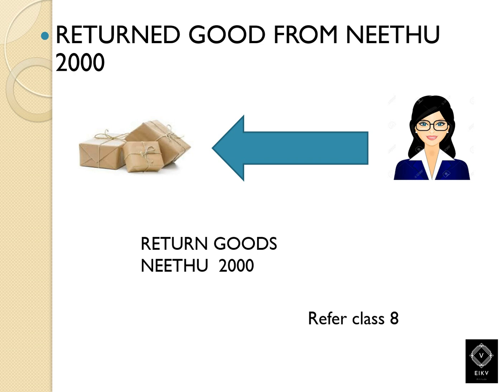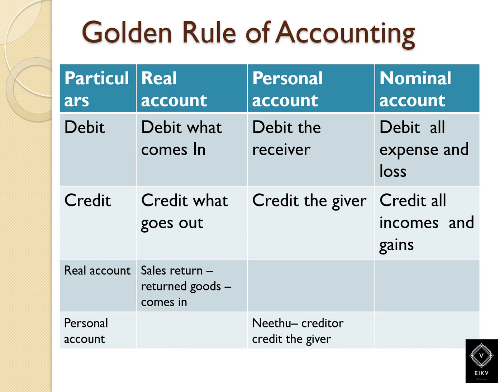So, the golden rules of accounting — the nature of accounts can be classified into three: real account, personal account, and nominal account. The rules of real account: debit what comes in, credit what goes out. Personal account: debit the receiver, credit the giver. Nominal account: debit all expenses and losses, credit all incomes and gains.